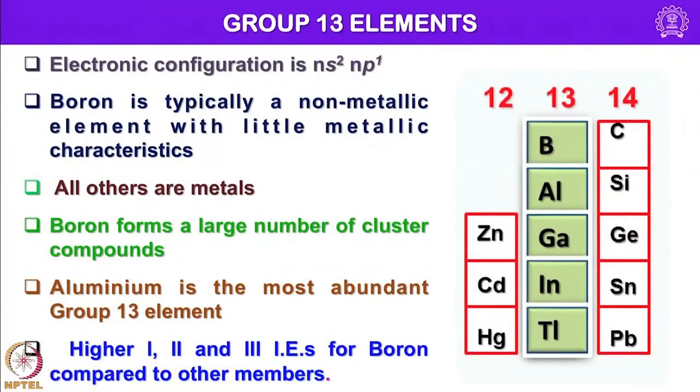Group 13 elements have valence shell electronic configuration of NS2NP1, that is S2P1, that means they have 3 electrons in their valence shell. Boron is typically a non-metallic element with little metallic characteristics and rest of the elements aluminum, gallium, indium and thallium all are metals. Boron forms a large number of cluster compounds known as boron hydrides and also one can incorporate other p-block elements. I will be discussing all those things in more detail and also I will be talking about the structural aspects pertinent to boron hydrides using Wade's rules.